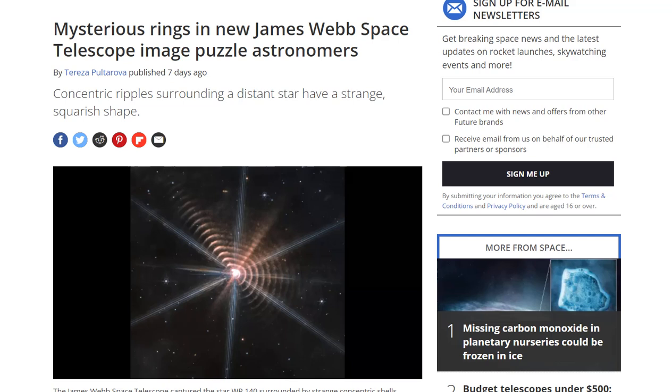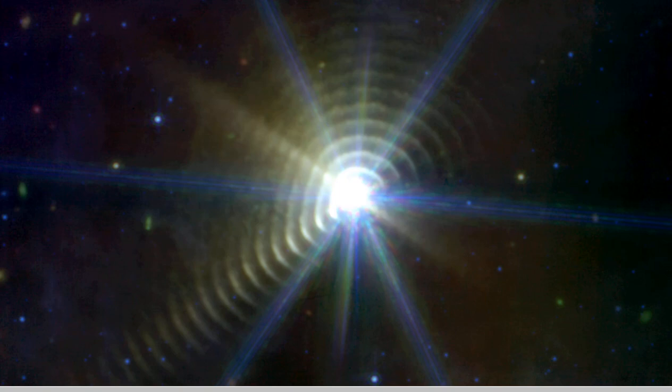Now the JWST, or the James Webb Space Telescope, observed uniquely shaped rings around a distant star in an image shared by citizen scientist Judy Schmidt. The boxy rings around the star in the constellation Cygnus, called WR140.